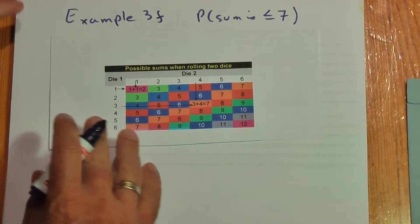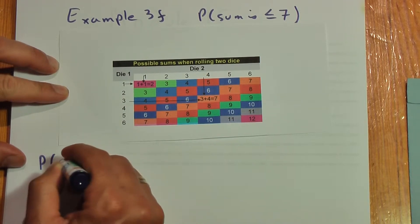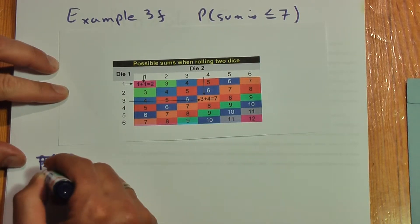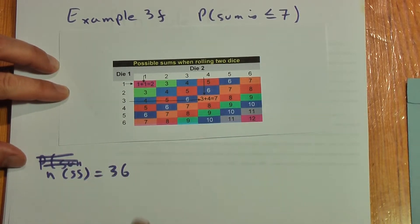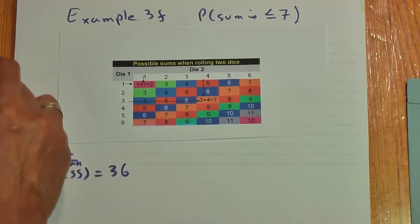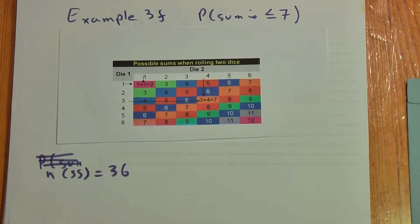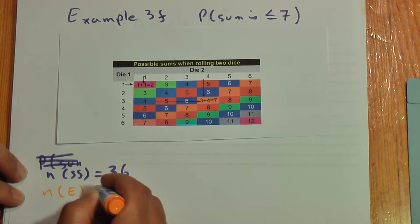We always start off with a sample space. Size of the sample space equals 36. Now we want to know, how big is the set? How many elements are in the set of desired outcomes?